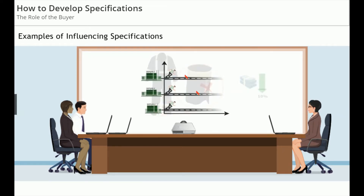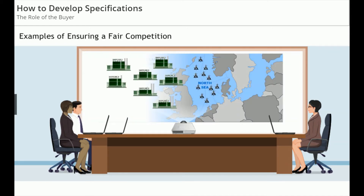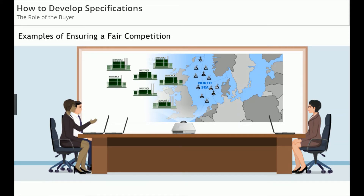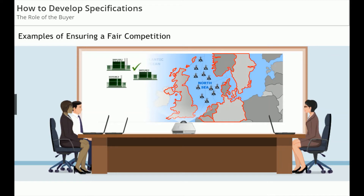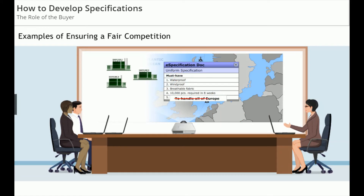You said something about ensuring a fair competition. Can you give me some examples? Let's say you want to select a supplier that will handle all of the uniform cleaning for all European sites. There are only a few suppliers that would be able to do that. So one way of opening up competition to more suppliers would be to remove the requirement from the specification that the supplier handle all of Europe.